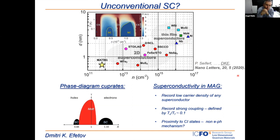Question from audience: Do you have any estimation of the value of U from experiments? That would also allow you to distinguish between the Mott scenario and other alternatives. Response: From transport we cannot directly measure U, but from STM, Yacoby reports 25 meV for U.